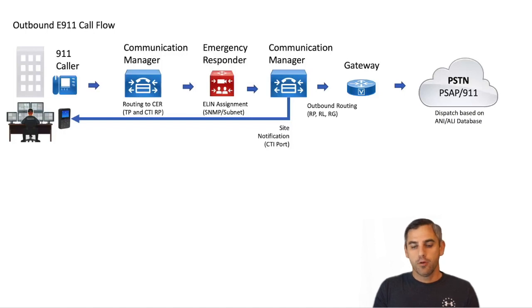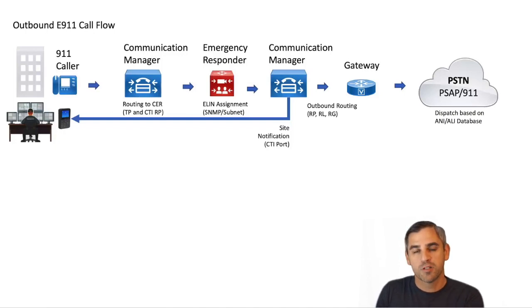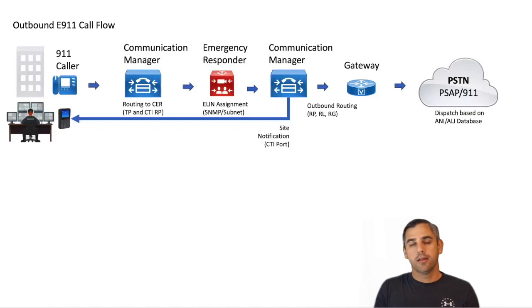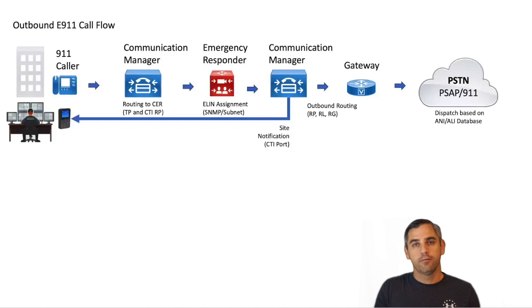Once a call arrives at the CTI route point registered to Emergency Responder, Communications Manager's job — at least in the first phase — is done. Emergency Responder now controls the call and can do all of its manipulation with the ELIN based on what ERL the endpoint that dialed 911 was located in.